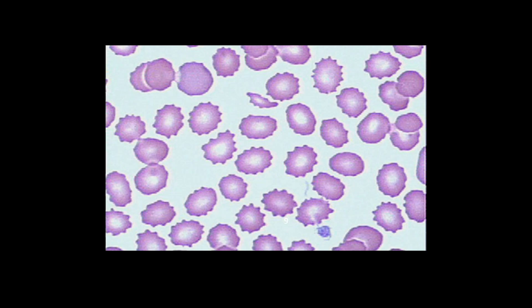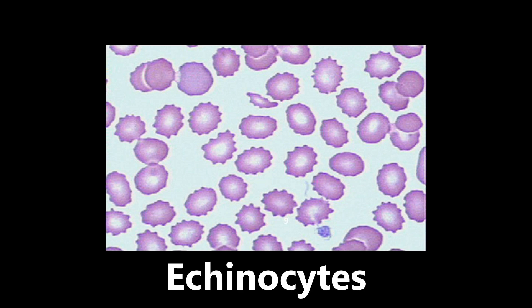Speaking of peripheral smears, we have one here with very abnormal cells. Compare a somewhat rounded, smooth cell to these jagged, irregular cells — these are examples of echinocytes, also known as burr cells. These are red blood cells with a thorny appearance. They are seen in a few conditions: pyruvate kinase deficiency, uremia in severe end-stage renal disease, microangiopathic hemolytic anemia, and sometimes mechanical damage to red blood cells. Know the shape, the name — echinocyte aka burr cell — and the associated disease processes.